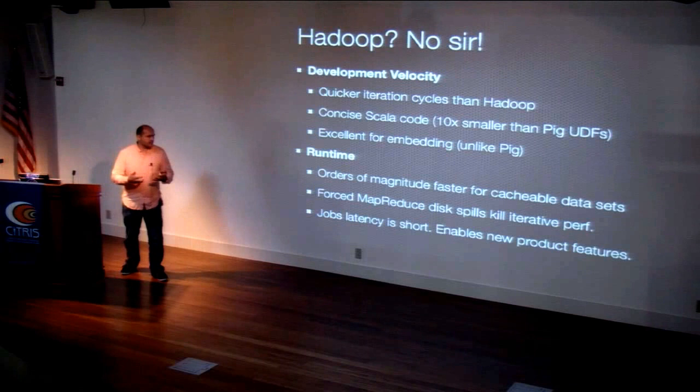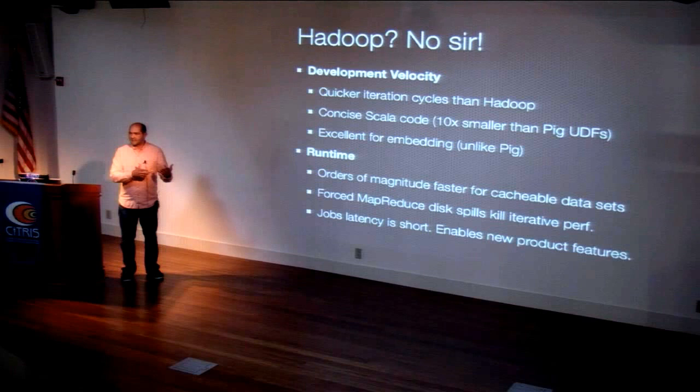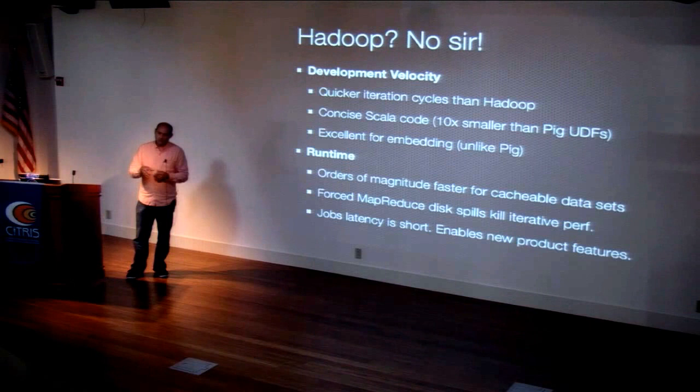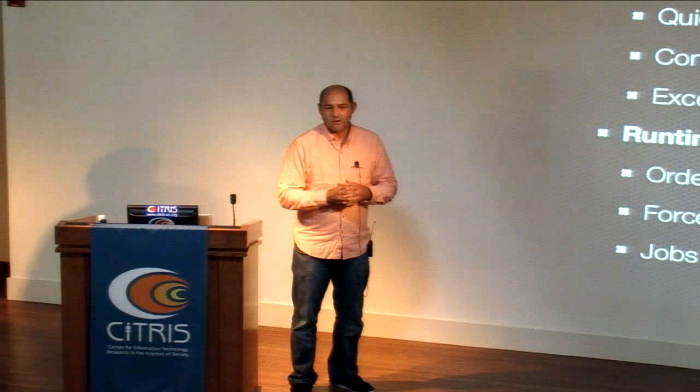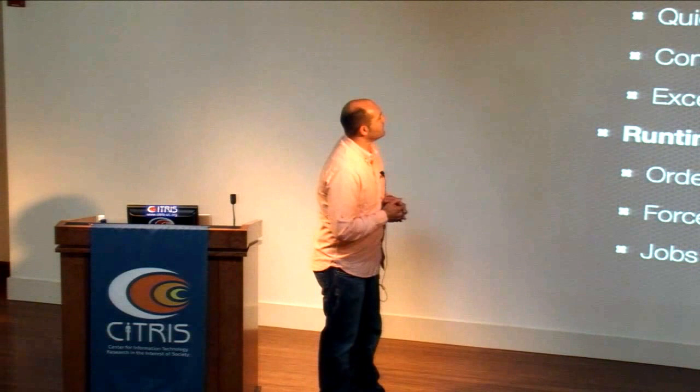Instead of having either specialized data structures or trying to compute everything in advance and just pull out the pre-computed answer — which limits how many things you can do, because if you can drag and drop and compare anything by anything there are probably too many permutations — we could basically offer features very quickly without needing to develop these specialized structures or try to pre-compute everything.